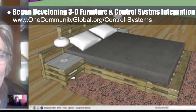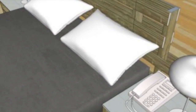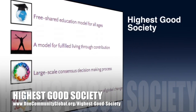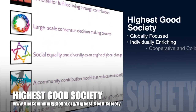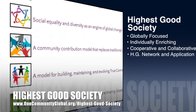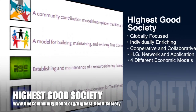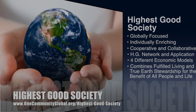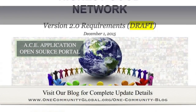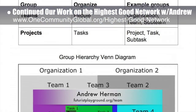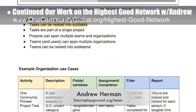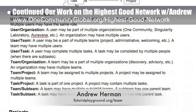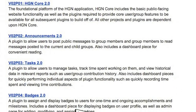Here are four pictures of us using the 3D model of the furniture and room to discuss how to create easy ways for users to interact with these systems. OneCommunity's approach to Highest Good Society is globally focused, individually enriching, cooperative and collaborative, includes a Highest Good Network and application, four different economic models, and combines fulfilled living and true Earth stewardship for the benefit of all people and all life on this planet. This last week the core team continued our work on the Highest Good Network with Andrew Herman, software engineer and core member of Futurist Playground. This work involves brainstorming and outlining how multiple organizations will be able to use this software to track time, resources, and more in different ways useful to each, but specific to each organization.